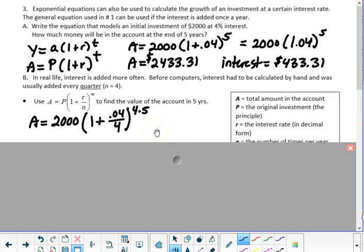Well, if you're going to add the interest 4 times a year, you're not going to add 4% four times a year. You're going to add one fourth of 4% four times a year. So you take the interest rate, divide it by 4. So basically, you're going to add 1% four times a year.